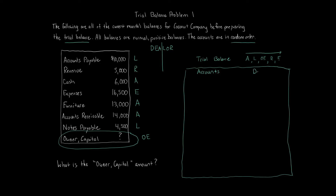Remember, debit simply means left and credit means right. All the numbers we're given are normal positive balances. Using DEALOR: drawing, expenses, and asset accounts increase on the debit or left side; liabilities, owner's equity, and revenue accounts increase on the right or credit side. Since they're all positive normal balances, they go on the side they increase on.